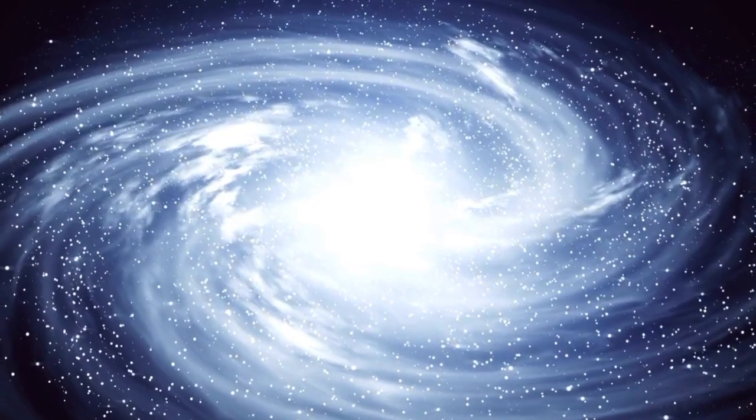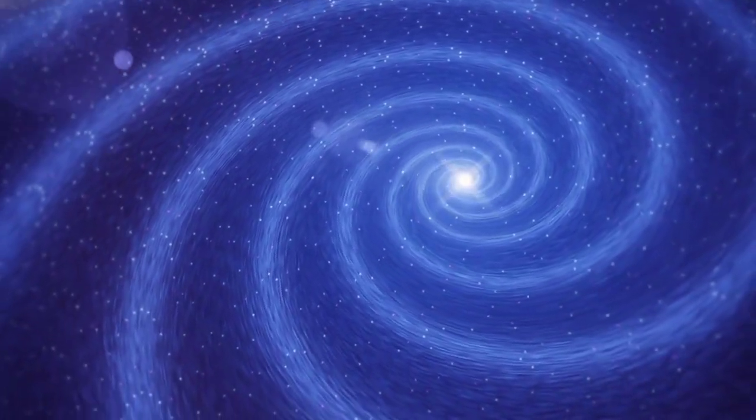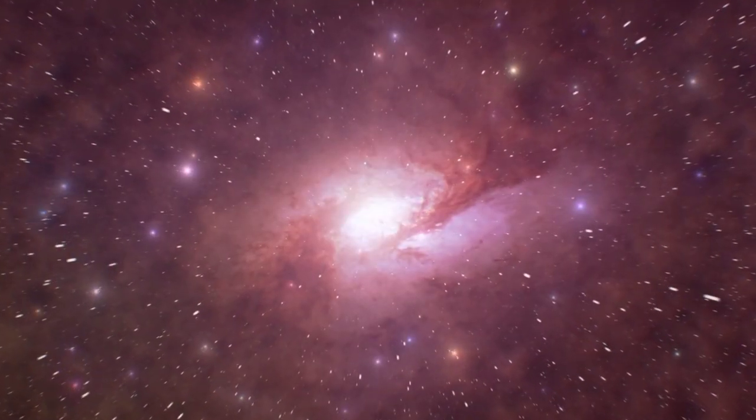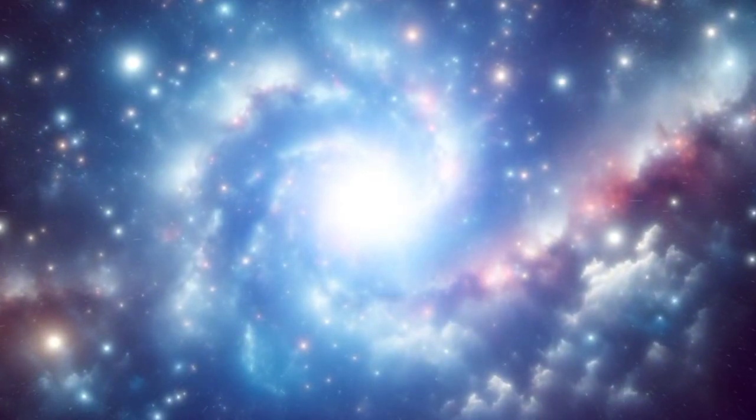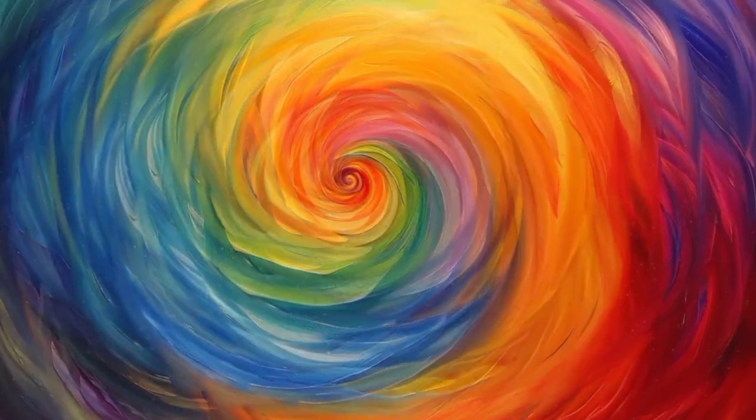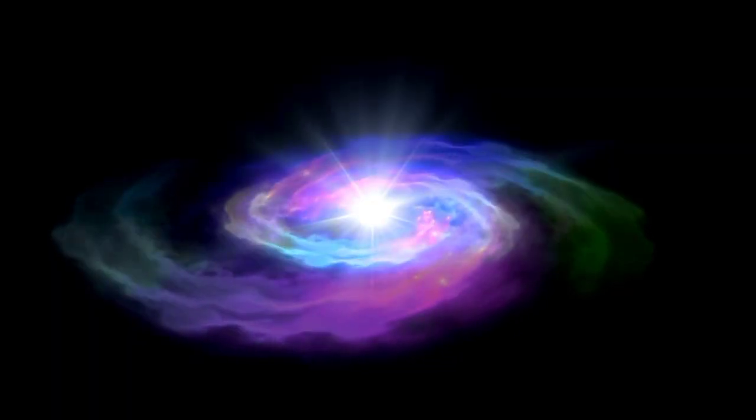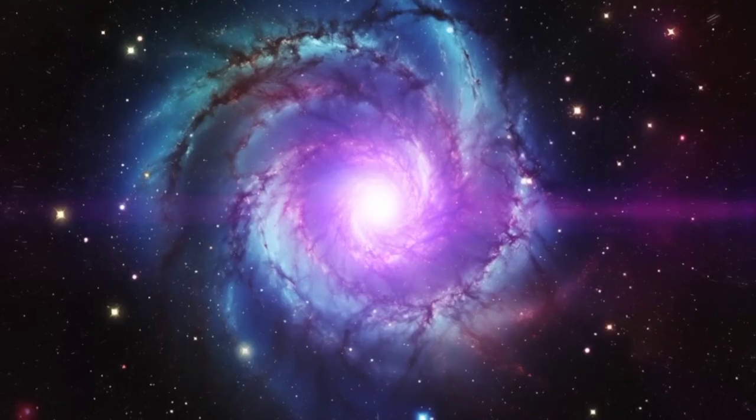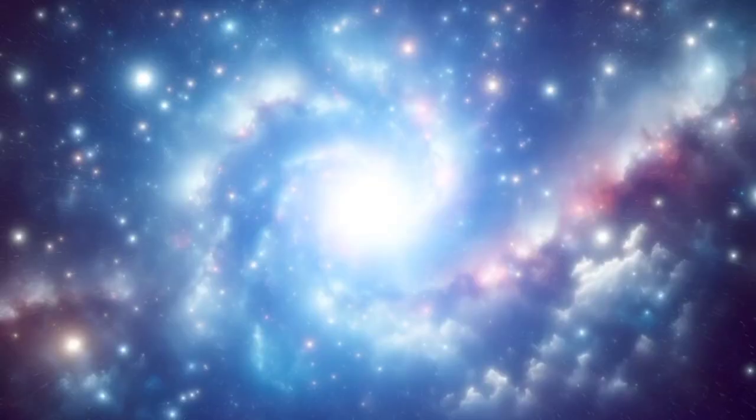As a red supergiant, Betelgeuse is in the twilight of its existence, a phase characterized by expansion and cooling after a life spent fusing hydrogen into helium. The age of Betelgeuse, believed to be around 8 to 8.5 million years, is relatively young in human terms but ancient for stellar lifetimes. The life cycle of stars like Betelgeuse is a story of transformation driven by nuclear fusion and gravity.